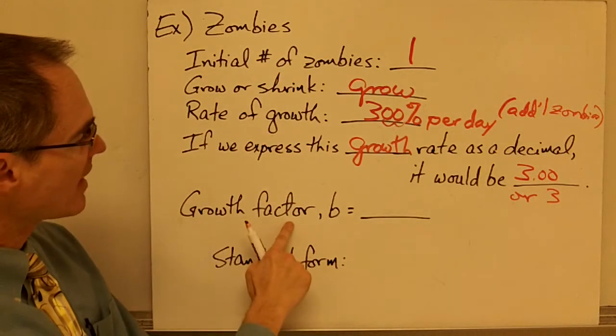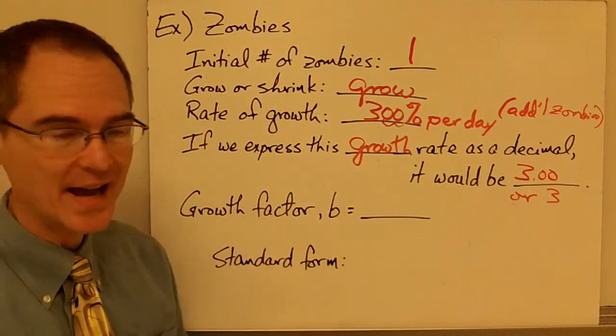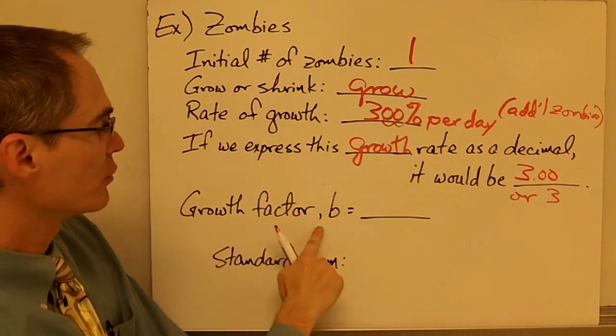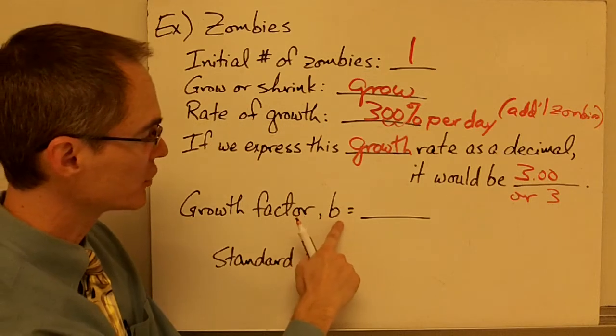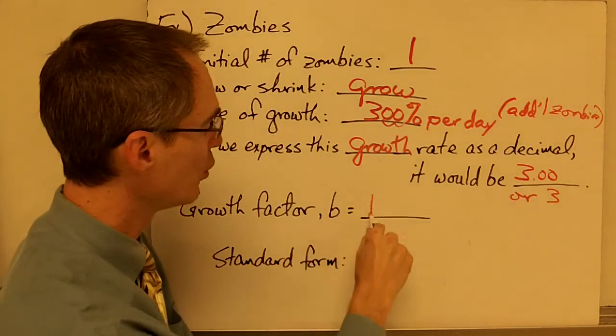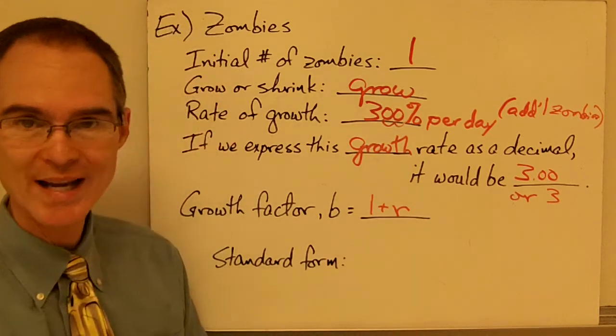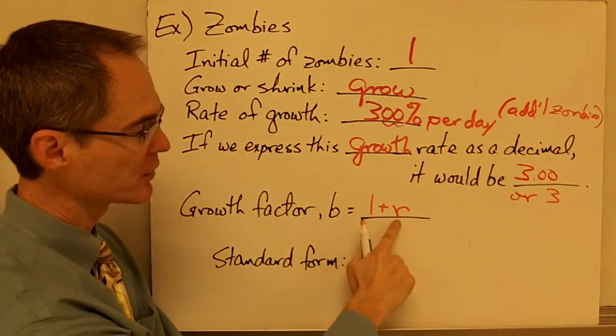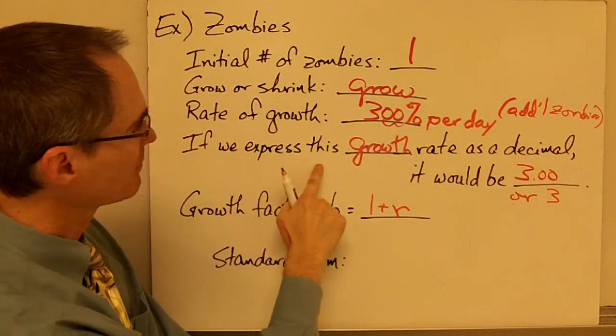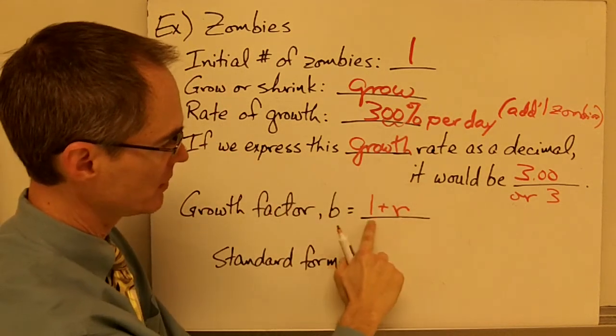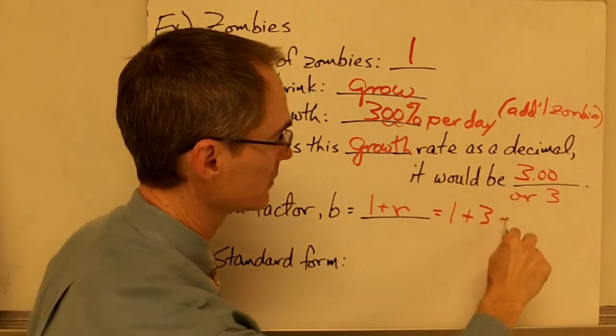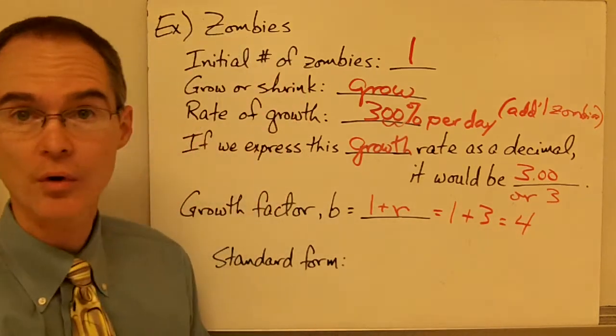All right, now I would like to calculate my growth factor, and I remember from the box above on your notes, the growth factor is equal to, which I call B, my growth factor is B, B is equal to 1 plus my growth rate. And remember, I have to express my growth rate as a decimal, which is what I've done right here. So if my growth rate is 3, then I can calculate my growth factor as 1 plus 3, which is 4.00.